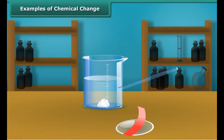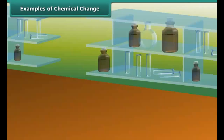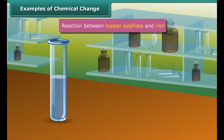When magnesium oxide is dissolved in water, magnesium hydroxide is obtained, which turns red litmus blue. This suggests that magnesium hydroxide is basic in nature.